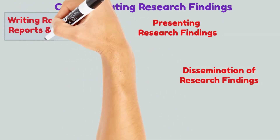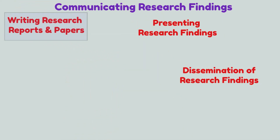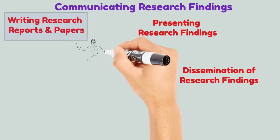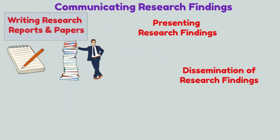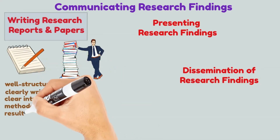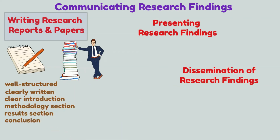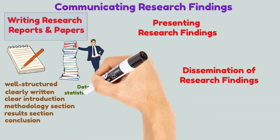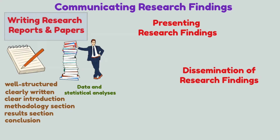Writing research reports and papers is one of the most common ways that researchers communicate their findings. These documents are typically published in academic journals and serve as a way for researchers to share their findings with their peers. Research reports and papers should be well-structured and clearly written, with a clear introduction, methodology section, results section, and conclusion. The findings should be supported by data and statistical analysis, and researchers should also include limitations and implications of their findings.